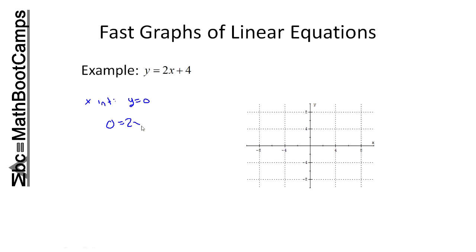I get 0 equals 2x plus 4. Okay, I got to get rid of the 4, so subtract from both sides. Minus 4 equals 2x. X would then be minus 2.